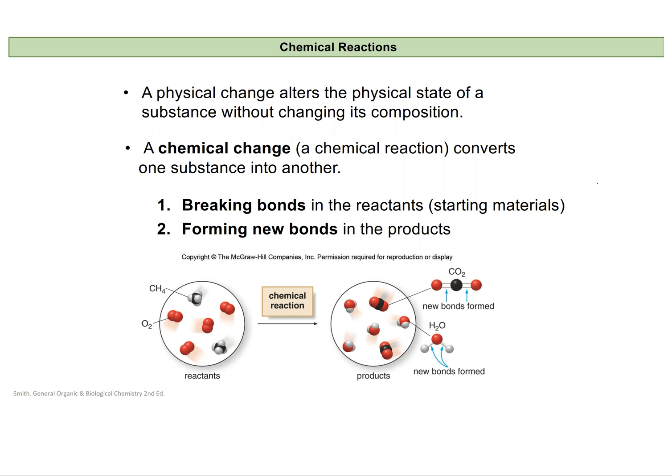This means that bonds will break and new bonds will actually form. Here's an example of methane, which is CH4, and oxygen, combining to form carbon dioxide and water. This would be a chemical change because we need to break bonds to form new ones, and we end up with entirely different chemicals at the end.